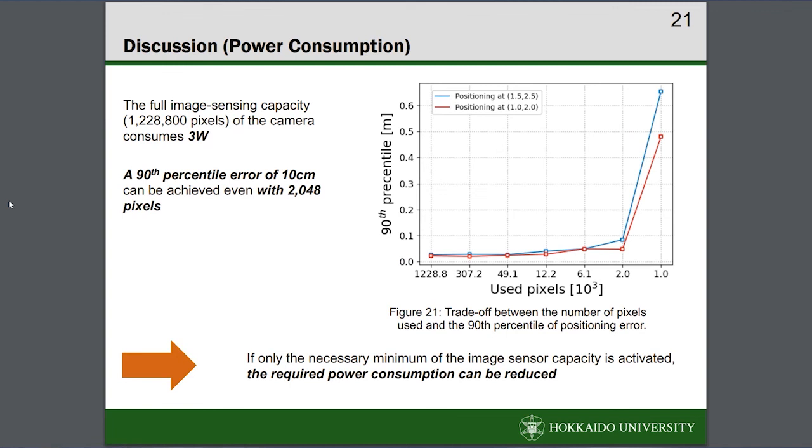This slide is about power consumption. The power consumption of the camera used in our experiment was 3W. Although the full image sensing capacity of the camera was used in the proposed method, sufficient positioning accuracy should be achieved even with a much smaller number of pixels as described in Section 5.3. If only the necessary minimum of the image sensor capacity is activated, the required power consumption can be reduced.